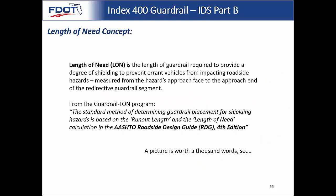IDS part B is essentially the length of need. Part A simply tells you to design the guardrail as shown in the standard — emulate the approach grading, the lengths shown, and all the geometry shown in the standard. We'll now move on to part B, which is the length of need concept. We'll go ahead and read the definition straight out of the IDS.